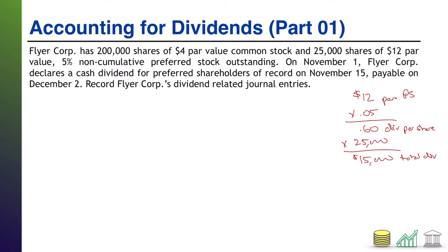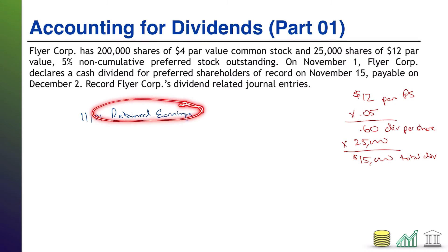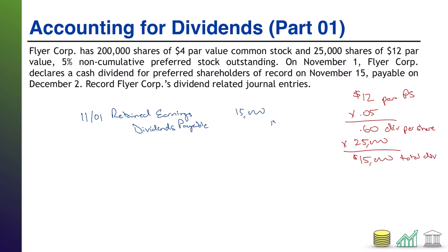Now that we know the dividend is $15,000, let's record the journal entries. On November 1st, FlyerCore is declaring the cash dividend. On that day, we remove the dividend from retained earnings — or using the temporary account approach, you'd record a cash dividends account that you'll later close to retained earnings. We are also obligated on that day to create a liability for the future payment called dividends payable for $15,000.